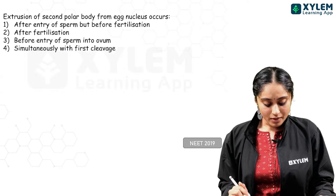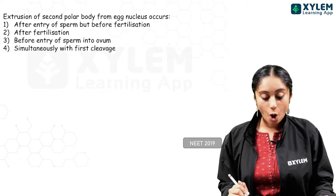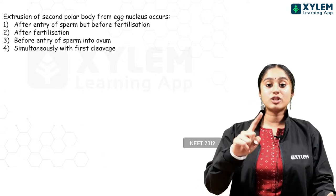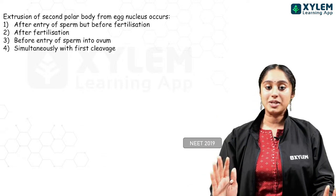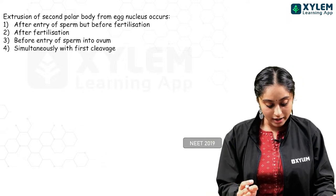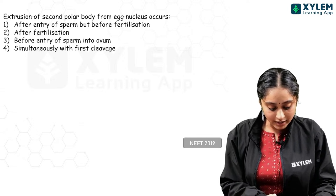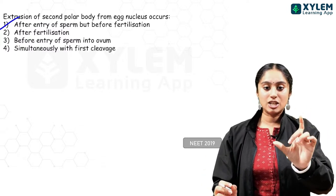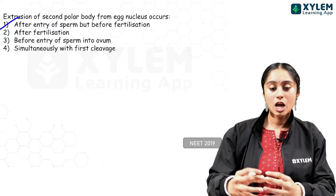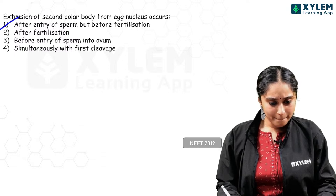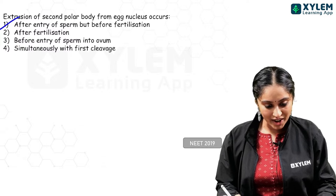NEET 2019: extrusion of the second polar body from the egg nucleus occurs when? Second meiosis must be complete before the second polar body can be extruded. The answer is the same — after the entry of sperm but before fertilization. Just before fertilization, the oocyte completes meiosis; that is when fertilization can occur. So when meiosis is complete, the second polar body can be extruded. Answer: option 1.